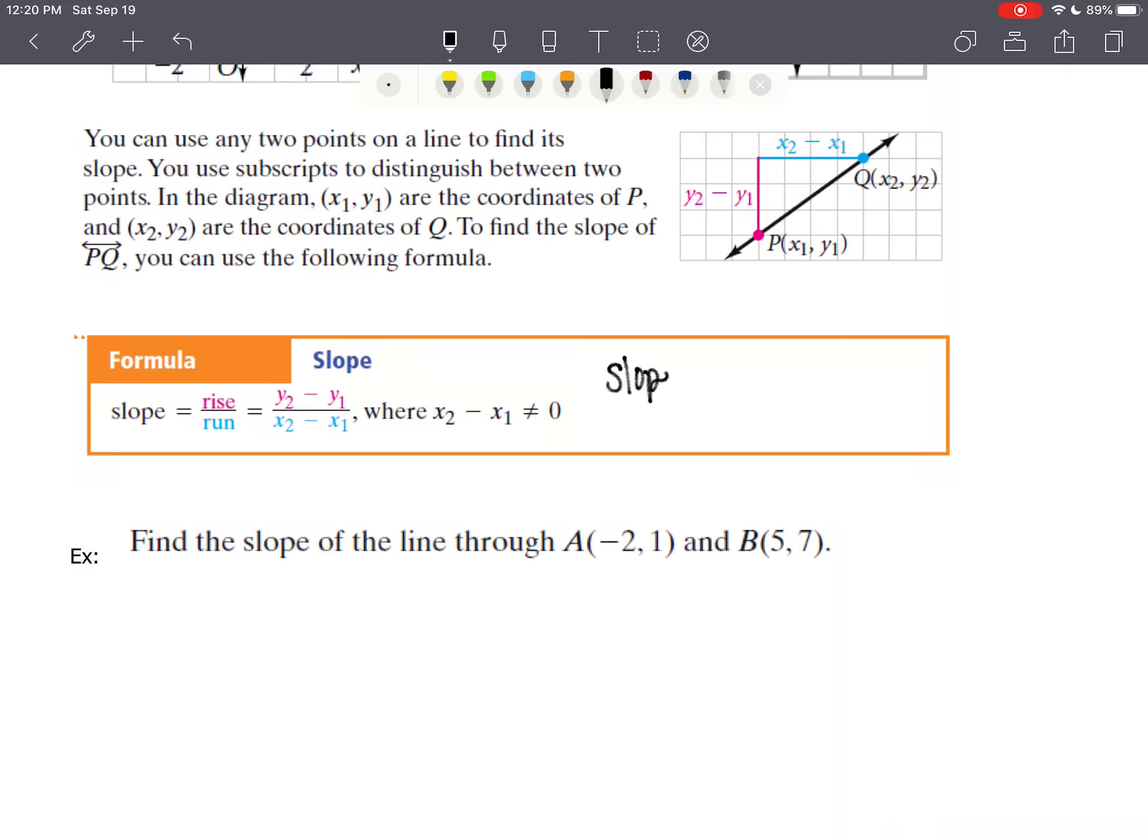Okay, our slope formula, we call m, is our slope, and the formula is the change in y over the change in x. So I like to write my ordered pairs on top of one another, vertically, like that, and I look at my y values. My slope is going to be y₂ minus y₁.